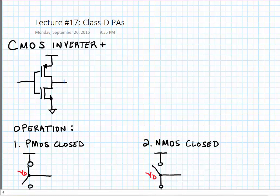In this lecture, we're going to talk about Class D power amplifiers, particularly their CMOS implementations. So a Class D PA is a CMOS inverter plus a series resonant filter.